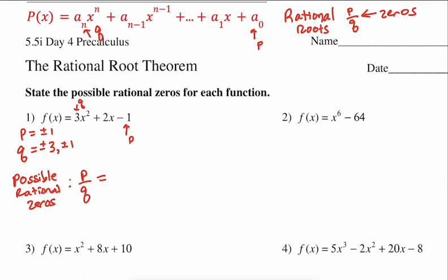Don't forget that 1 divides into 3 evenly. So if we take our P list and divide it by 1, we get 1. If we divide by 3, we get plus or minus 1 third. So the full list is plus or minus 1 and plus or minus 1 third. If this polynomial hits the x-axis at a rational number, it has to be from that list. If we plug in 1, negative 1, 1 third, and negative 1 third and none work, all other zeros are either imaginary or irrational.